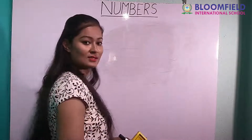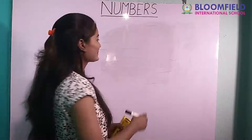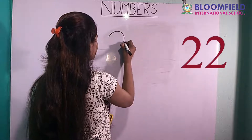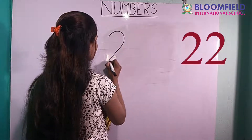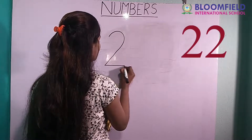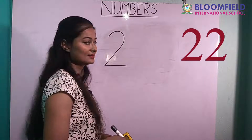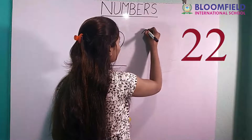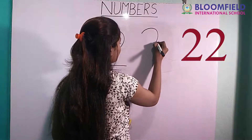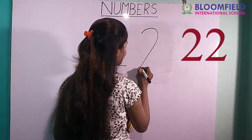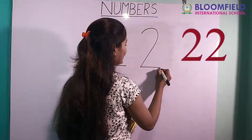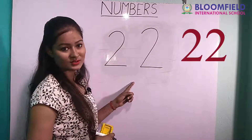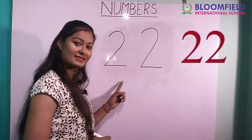So next: a curve, then small slipping line. A curve, then one more slipping line. Two two. Twenty two.